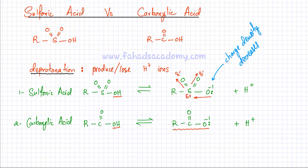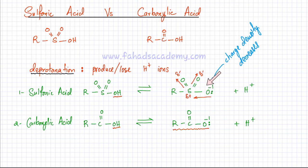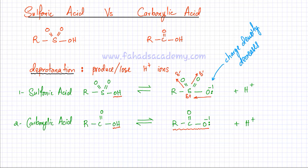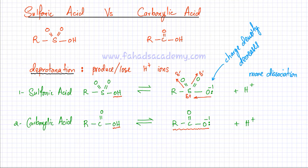As this charge density decreases, the attraction for H⁺ becomes lesser, so the chances of a reverse reaction occurring become lesser. The negative charge that was concentrated gets spread out over the entire molecule, its charge density decreases, and it no longer strongly attracts H⁺. So less backward reaction occurs, meaning more dissociation — more forward reaction — in the case of sulfonic acid. Therefore sulfonic acid is comparatively a stronger acid.